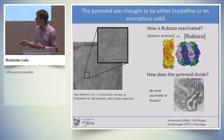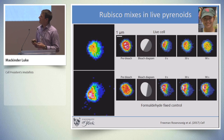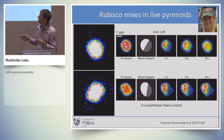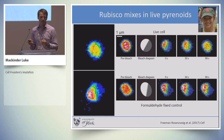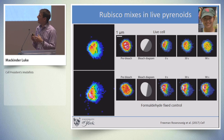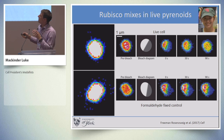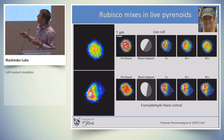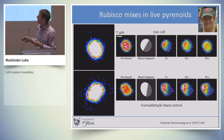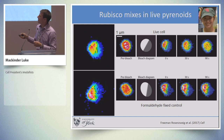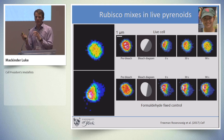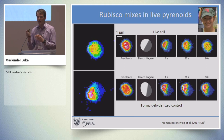We took fluorescently tagged rubisco found within the pyrenoid and did a FRAP experiment — fluorescent recovery after photobleaching — to see how unbleached rubisco moves throughout the pyrenoid. We photobleach half the pyrenoid, switching off the YFP fluorescence, and then watch what happens. We see that it rapidly fills back in and becomes homogenous within about 30 seconds. With a formaldehyde-fixed control there is no recovery, confirming that rubisco is rapidly moving around in the pyrenoid. We showed this for other pyrenoid components as well — everything is continually mixing in the pyrenoid.